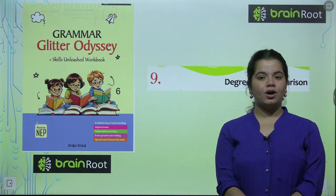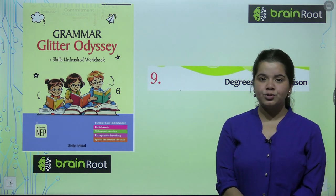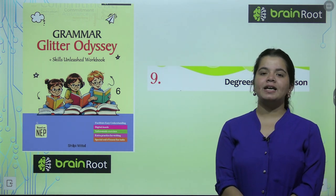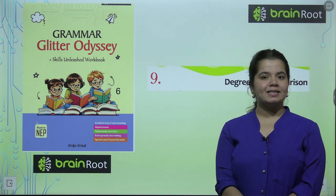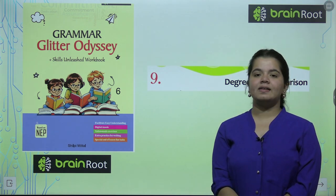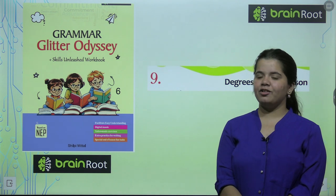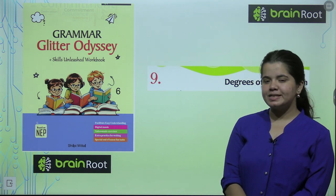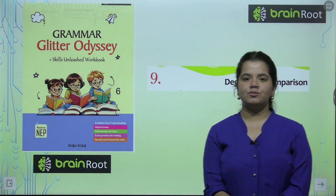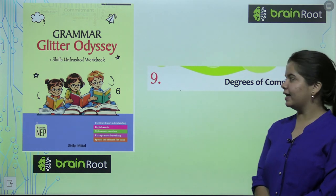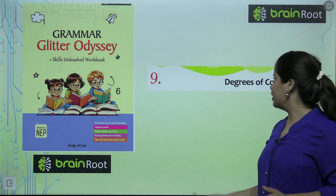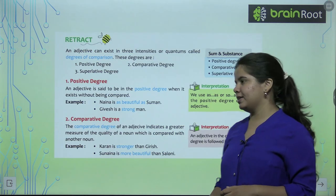Hello everyone, how are you all? Today we are starting a new chapter from your English language book. We are studying the Brain Roots series and the name of our book is Grammar Glitter Odyssey of Class 6. So today we are starting our chapter 9, Degrees of Comparison.